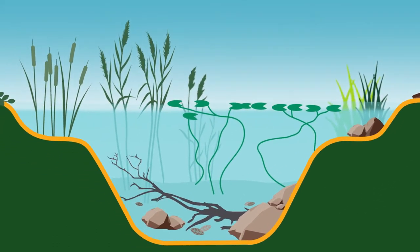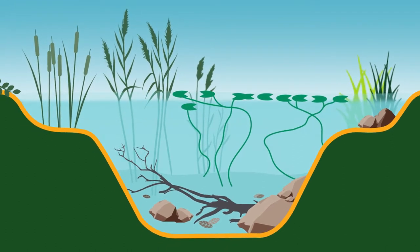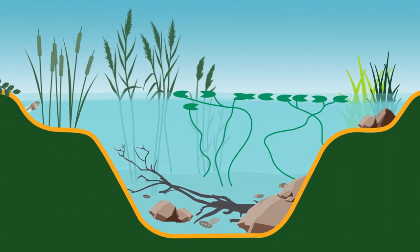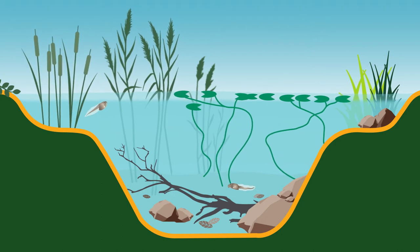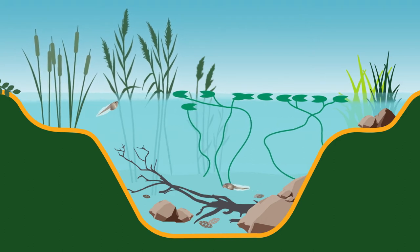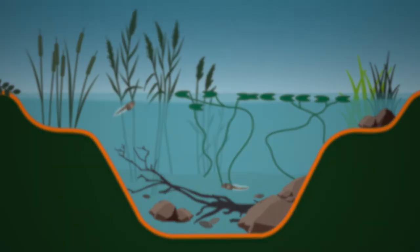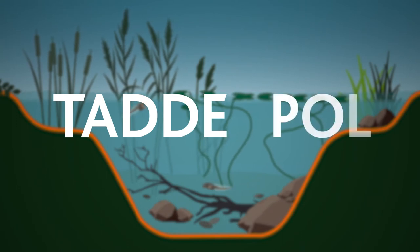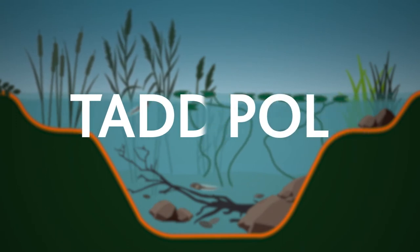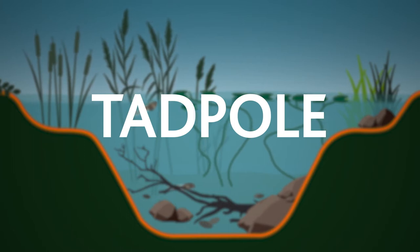What is a tadpole and what role do they play in the environment? The name tadpole comes from Old English — 'tad' meaning toad and 'pole' meaning head — 'toadhead,' as they look a bit like a large head with a tail.